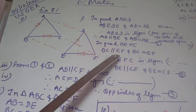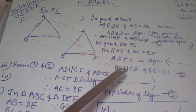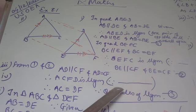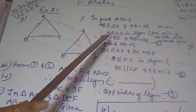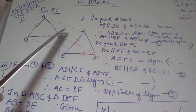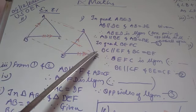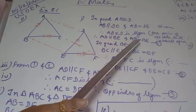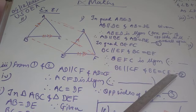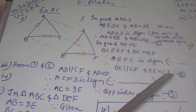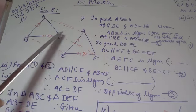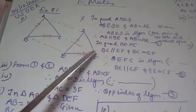From equations 1 and 2, we can see that AD is parallel to BE and BE is parallel to CF, so we can write AD is parallel to CF. Similarly, AD is equal to BE and BE is equal to CF, so AD is equal to CF.